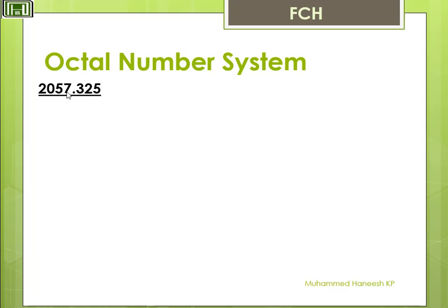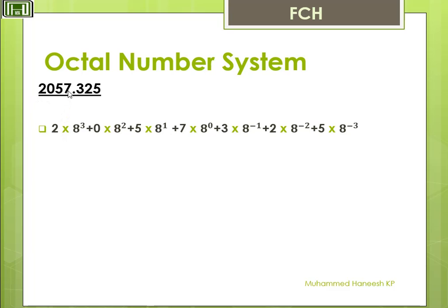We know that 7 comes in the position 8 raised to 0; 5 in 8 raised to 1; 0 in 8 raised to 2; and 2 in 8 raised to 3. After the point: 3 in 8 raised to minus 1, 2 in 8 raised to minus 2, and 5 in 8 raised to minus 3.